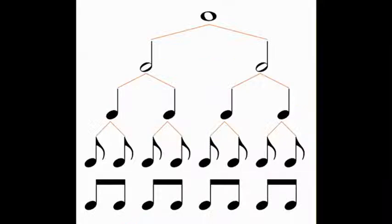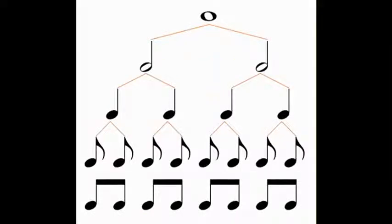If we go back to our note tree, we will see that if we divide our largest note value, the semibreve, into four equal parts, we get crotchet beats. Therefore, if we have a 4 as the bottom number of our time signature, we know that we are dealing with crotchet beats.